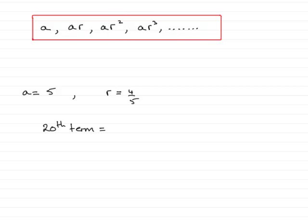Then the nth term is given by this formula. Nth term equals AR to the power n minus 1. So the 20th term then will be A times R to the 20 minus 1, to the power 19.